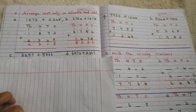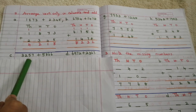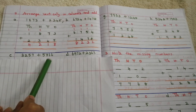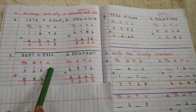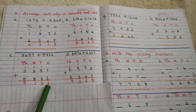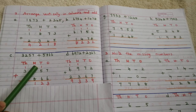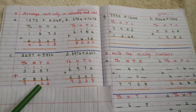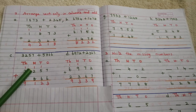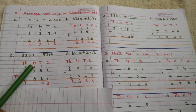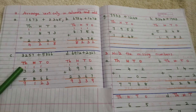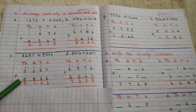Problem C: 3,257 plus 5,866. Adding 6 plus 7 we get 13 — write 3 here and carry 1. Then 5 plus 1 is 6, 6 plus 6 is 12 — write 2 here and carry 1. Then 2 plus 1 is 3, 8 plus 2 is 10, 10 plus 1 is 11 — write 1 here and carry 1. Finally, 3 plus 1 is 4, 4 plus 5 is 9. Answer: 9,123.